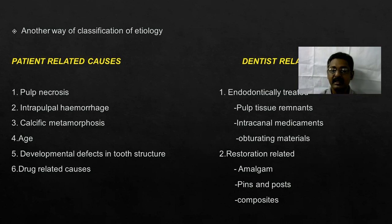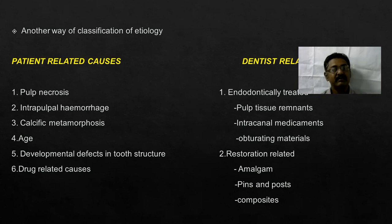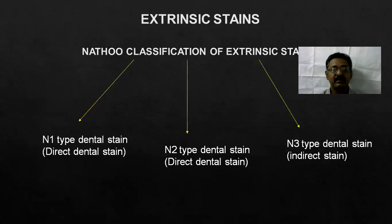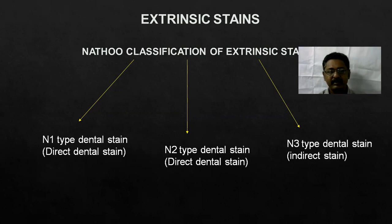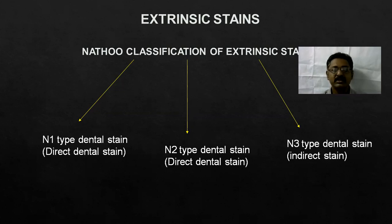Then restoration-related — that is the different restorative materials we use. They are amalgam, pins and posts, composites, etc., which can cause discoloration of the tooth. So the extrinsic stains can be basically divided into three types: N1, N2, and N3. This classification is given by Natho — N-A-T-H-O-O — Natho's classification of extrinsic stains.